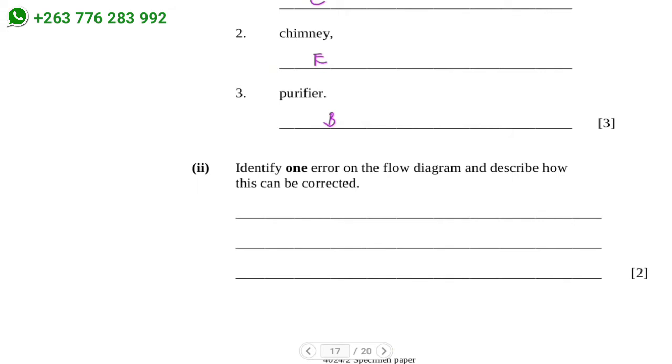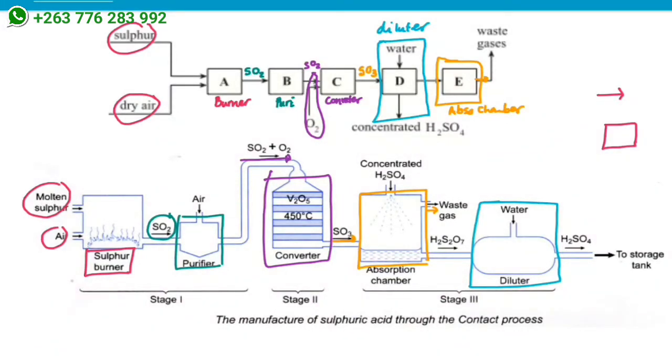The next question asks: identify one error on the flow diagram and describe how this can be corrected. Comparing both diagrams, the diluter in the given diagram is coming before the absorption chamber, but the diluter should come after the absorption chamber.